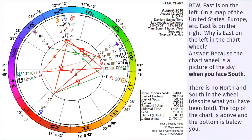Why is east on the left? If we look at a map of geographic regions — the United States, Europe — east is on the right. Why is east on the left in an astrology chart? East is on the left because the chart wheel is a picture of the sky when you face south. When you face south, east is on your left and west is on your right. The chart wheel is a picture of the sky when you face south — you don't often hear that or learn that in astrology, but that's what's happening.